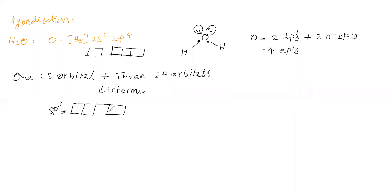Now let us fill the electrons. The valency shell contains 6 electrons, and those 6 electrons will fill. For one orbital we are giving 1 pair that acts as a lone pair. For another orbital also we are giving 1 pair that acts as a lone pair. For the remaining 2 orbitals we are giving 1 electron each because these will form sigma bonds.